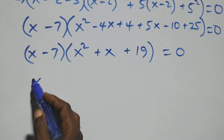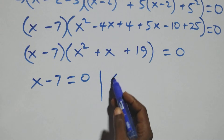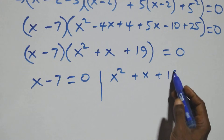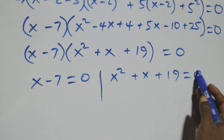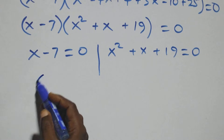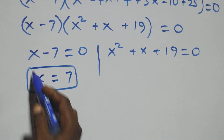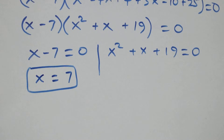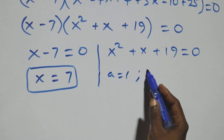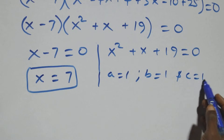We have two possible cases: x minus 7 equals 0, giving x equals 7, which is also a real solution. Or x² plus x plus 19 equals 0. For the quadratic, a equals 1, b equals 1, and c equals 19.